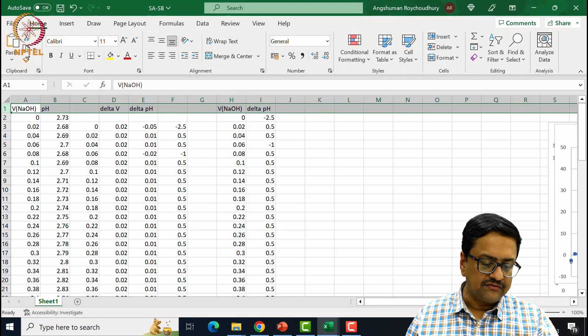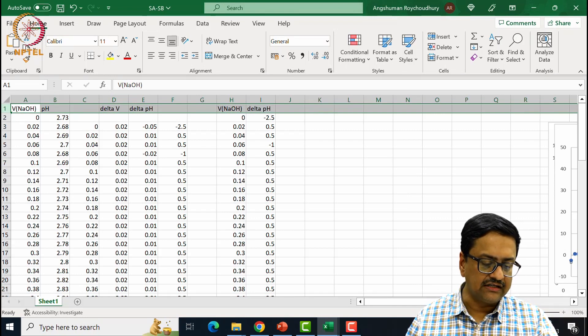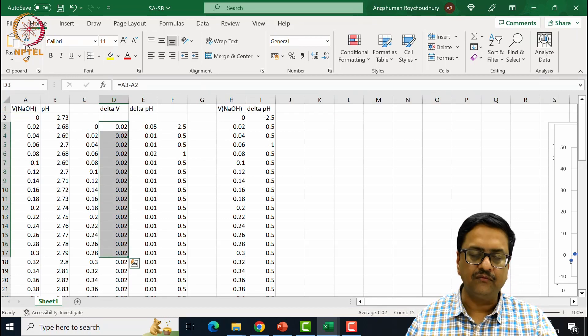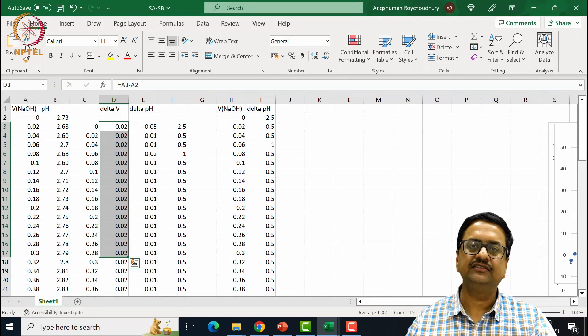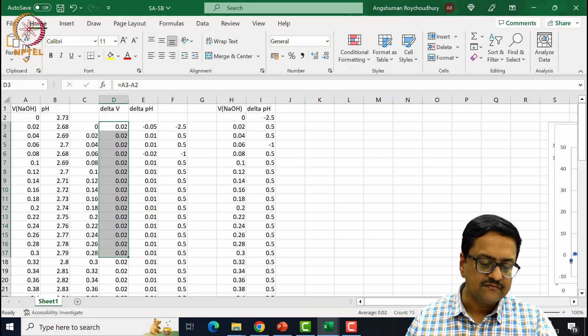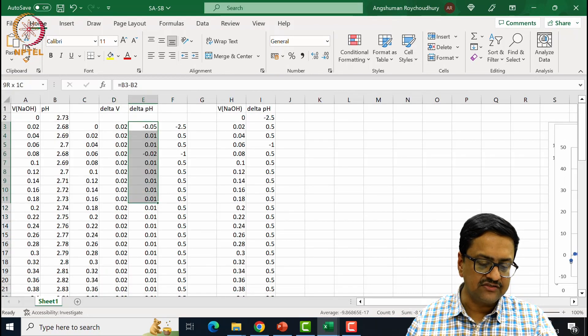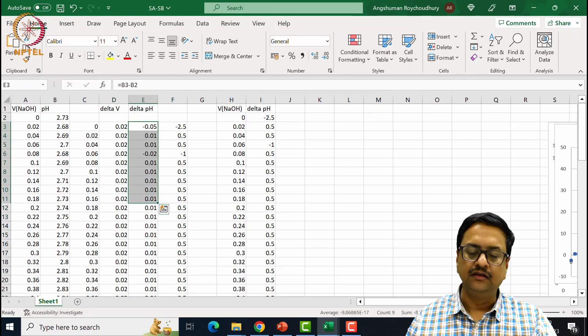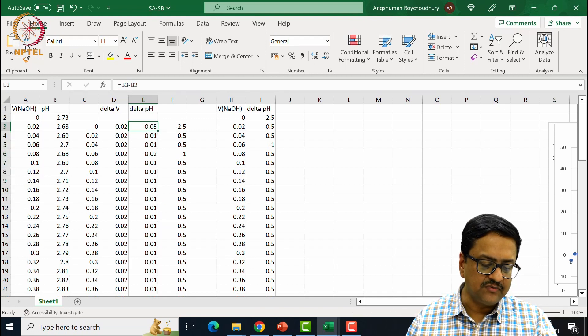So then what we have done is that we have calculated delta V, which is for all of them, it is 0.02, because we have always used 0.02 ml change. And then we calculated the value of delta pH as well. So then after calculating delta pH, that delta pH means,